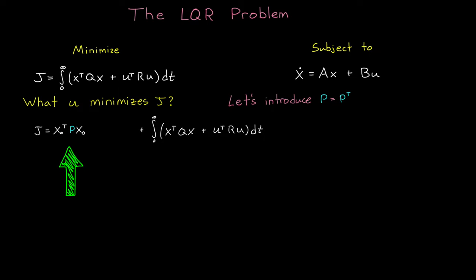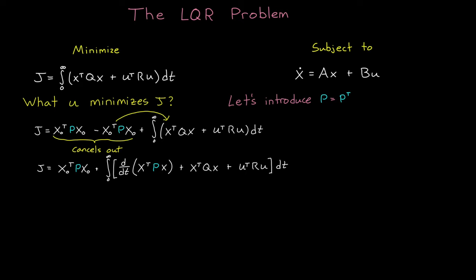All right? Now, we can't just add in extra cost, that changes the cost function. So we're going to subtract the same value to keep everything the same, which is perfectly harmless. Now, we can move this negative part into the integral, where it transforms into the derivative of x transpose times P times x.